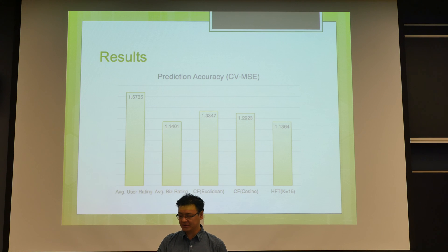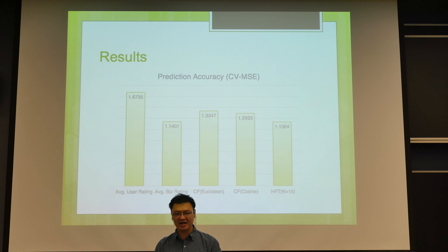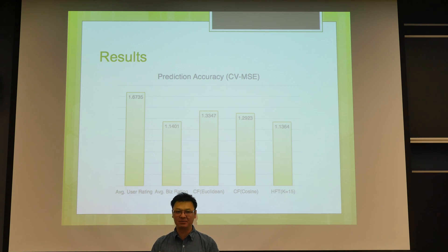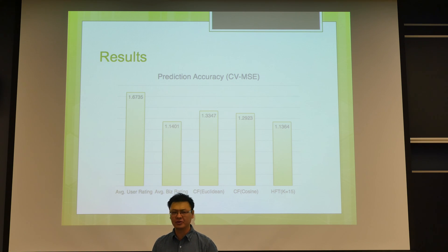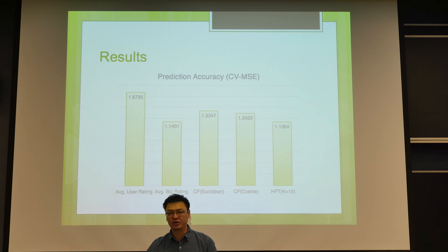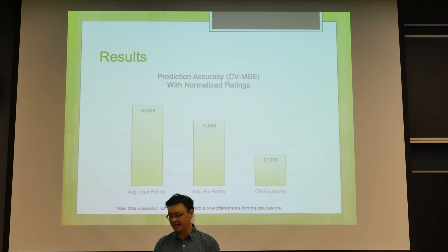The first benchmark is average user rating and the second is average business rating. The average business rating performs exceptionally well. Our two CF models beat the first benchmark but not the second. The HFT model performs the best, but only marginally better than average business rating. This made us wonder: why not just base our prediction on the average business rating and predict only the deviation from it? That's why we tried normalizing the data.